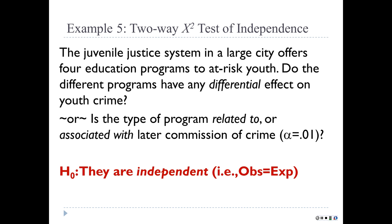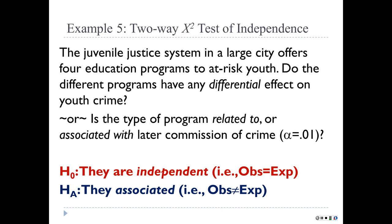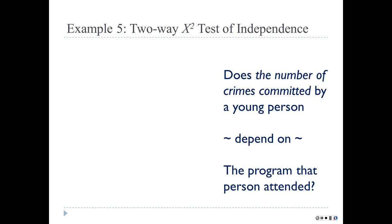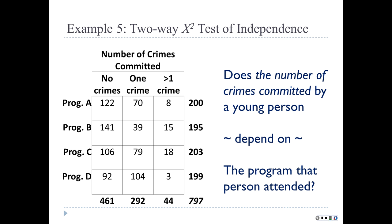The null hypothesis is that the two variables are independent—commission of crime later is independent of which program you attended. The alternative hypothesis is that they are associated with each other. Does the number of crimes committed by a young person depend on the program the person attended? Here's the data.